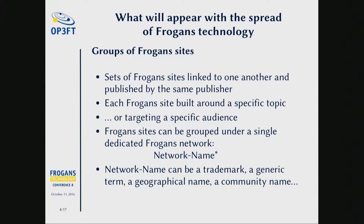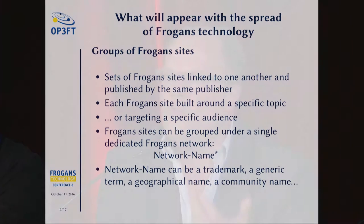The part before the star may be identical to the author of the group of sites, but it may also be a trademark, a generic name, a geographical name, or an imaginary name — in any language. So the idea is that not only will personal sites be developed, but there will also be a new category of objects on the internet with these groups of sites. These do not exist today.